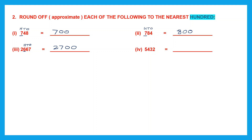Question 4: 5,432 to the nearest 100. First, get the digit in the hundreds place and underline it. Look at the digit to its right — it's 3, which is less than 5. That means the underlined digit will not change. So we have 5, 4 and the digits to the right of the underlined digit are all replaced with 0s: 5,400.